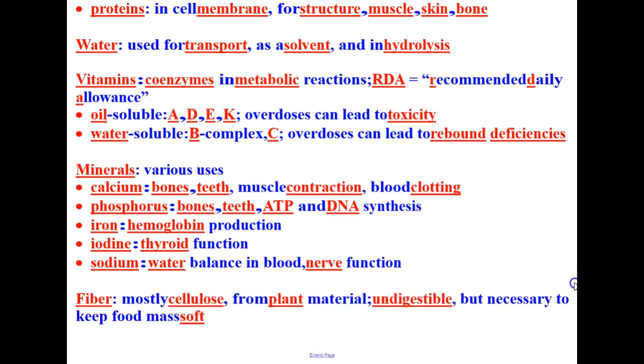Lastly, we have fiber. Fiber is mostly cellulose from plant material. It is undigestible, but is necessary to keep food mass soft.